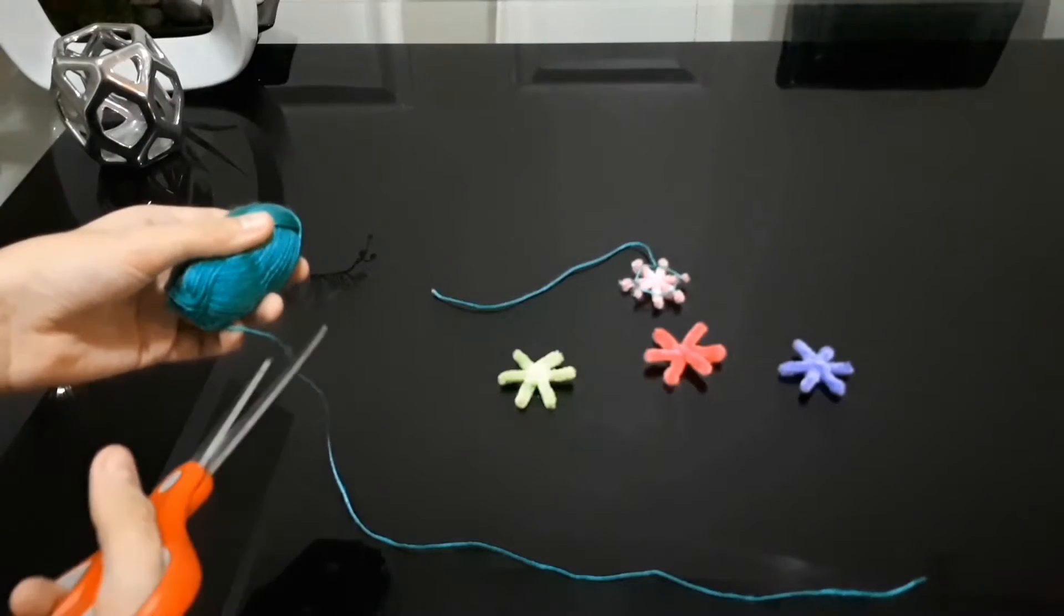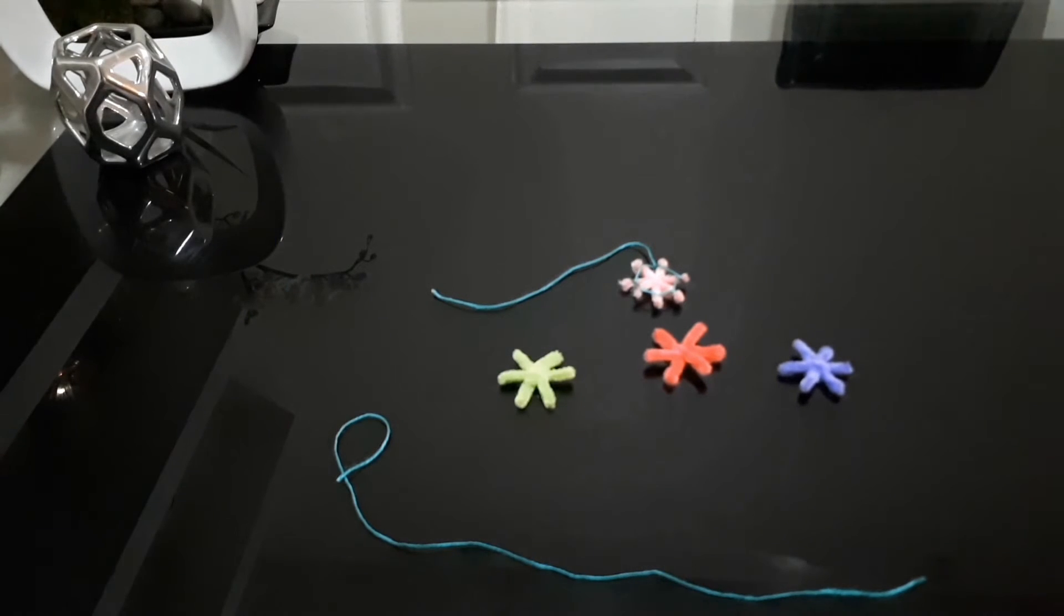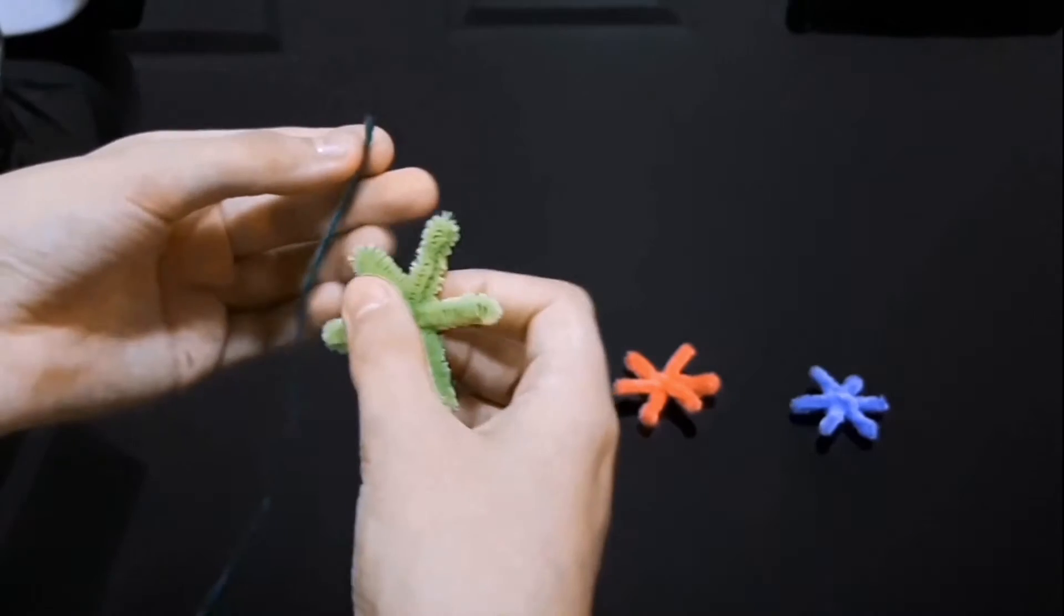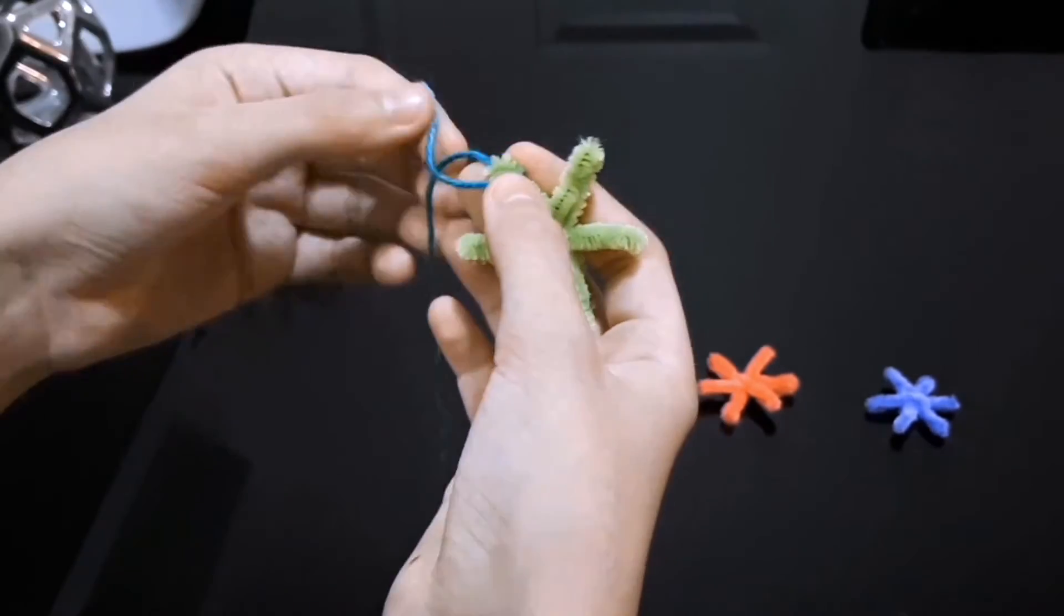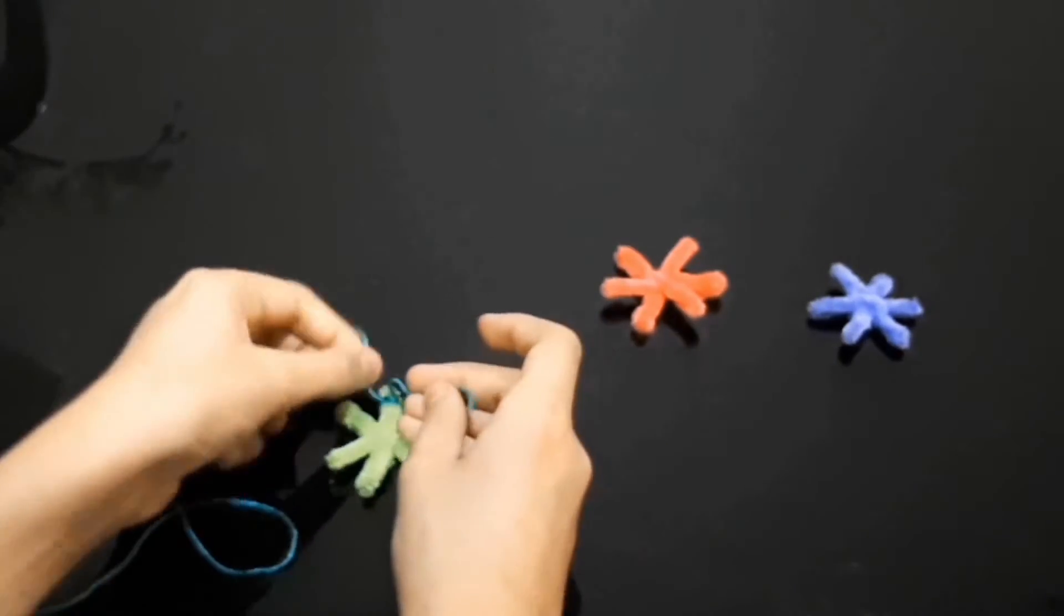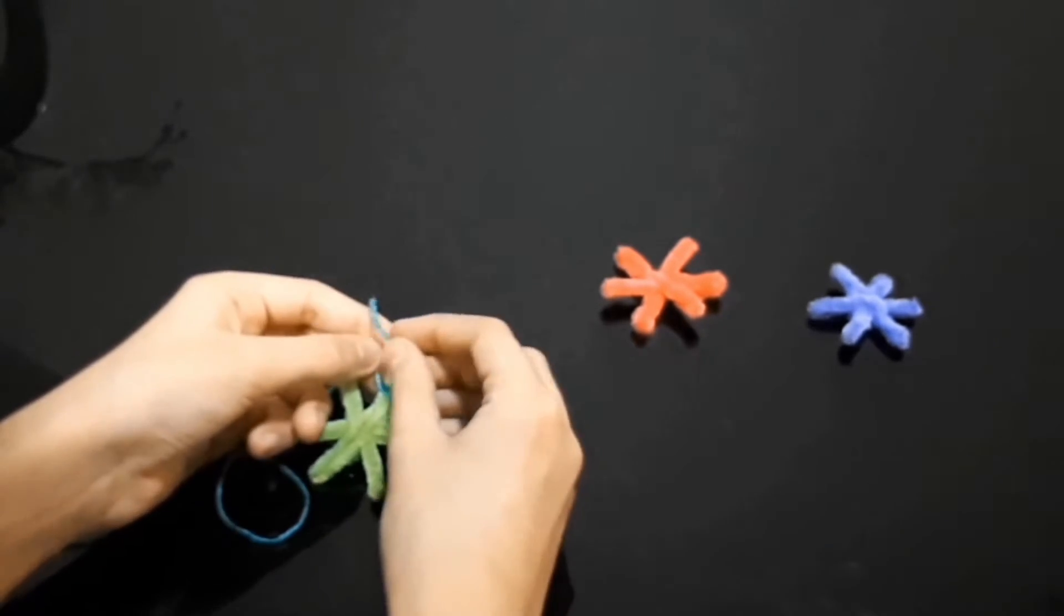Next, we're going to cut a string and tie it to each of the points. Tie a knot right here at the end. Make sure to tie it twice.